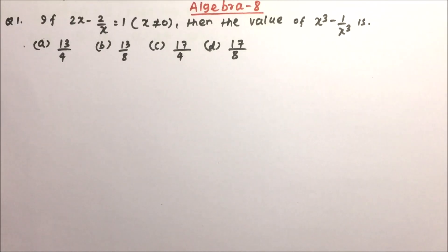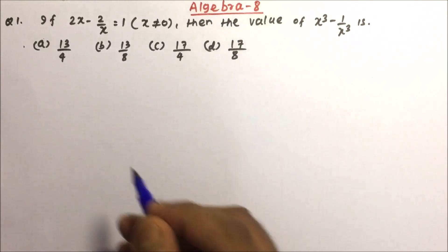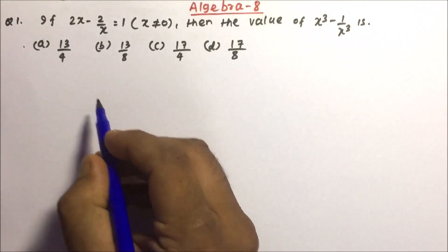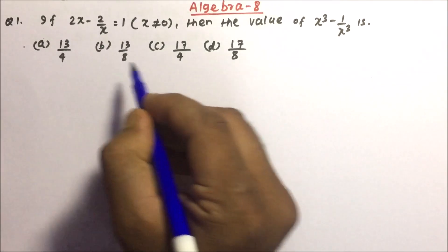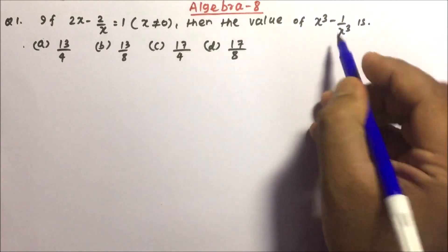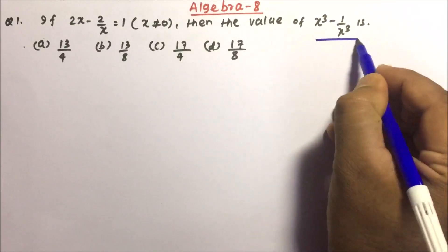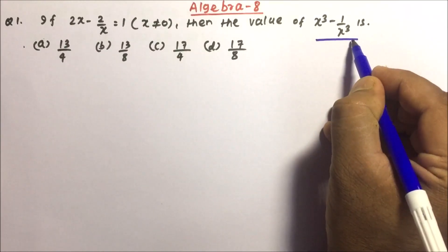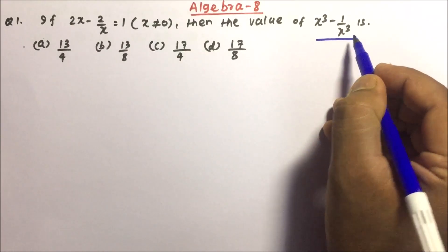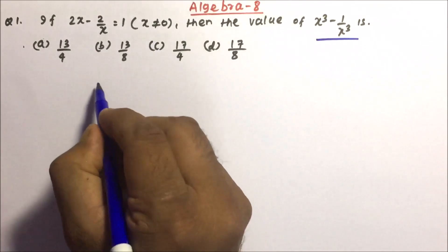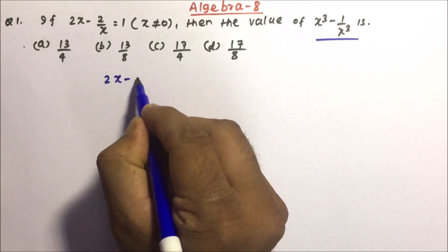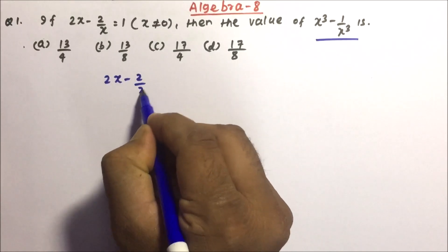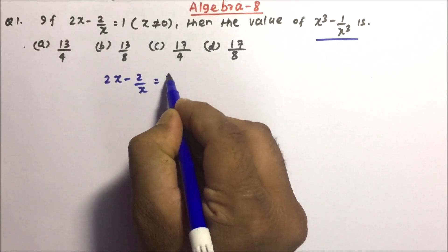Our today's questions are very important. Question number one: if 2x minus 2 by x is equals to 1, then find the value of x cube minus 1 by x cube. So what has been given is 2x minus 2 by x equals 1.